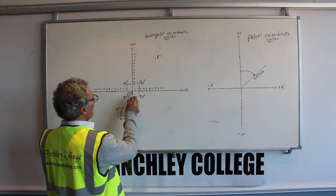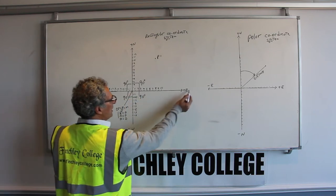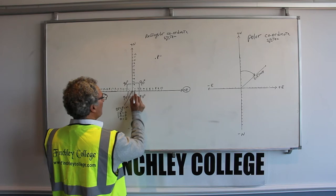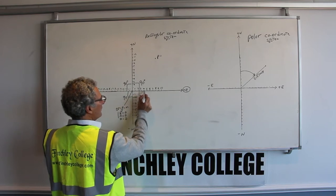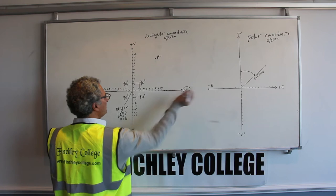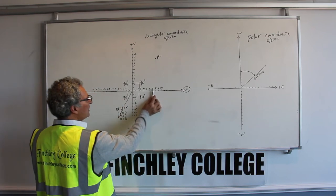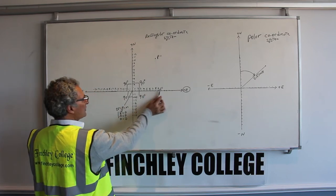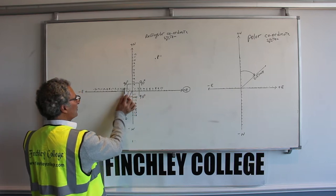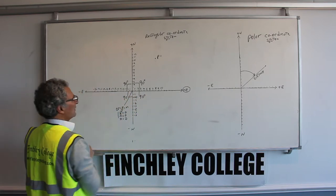If you're standing at the origin and you move to the right, your easting increases — you get plus east, going from 1 meter, 2 meters, 3 meters, 4 meters, all the way to infinity. If you move to the left, your easting decreases from 10, 9, 8, 7 all the way back to zero, then minus 1, minus 2, minus 3, to minus infinity.